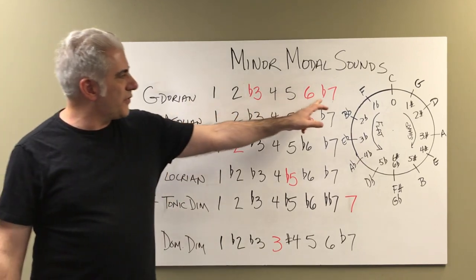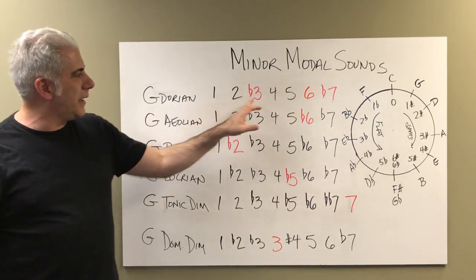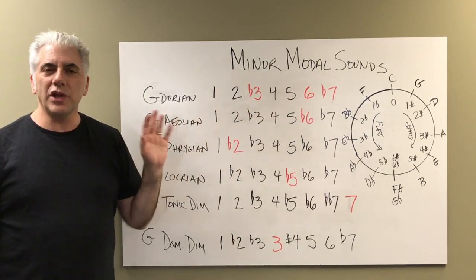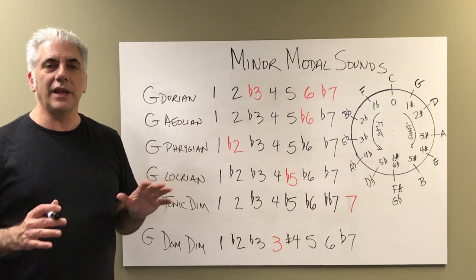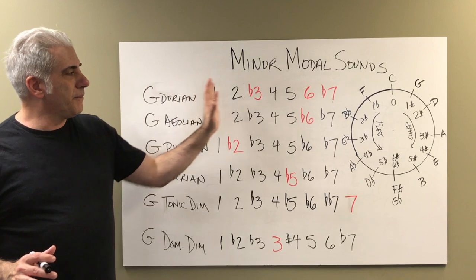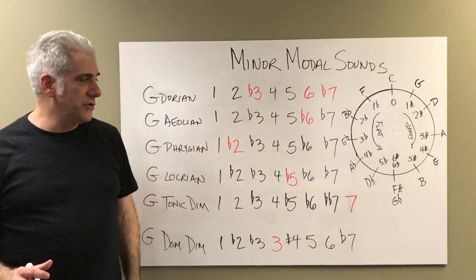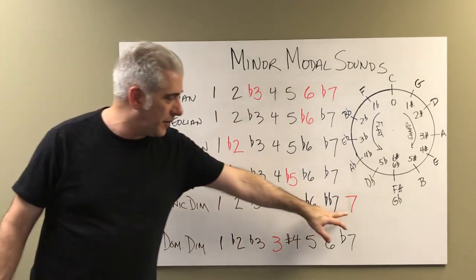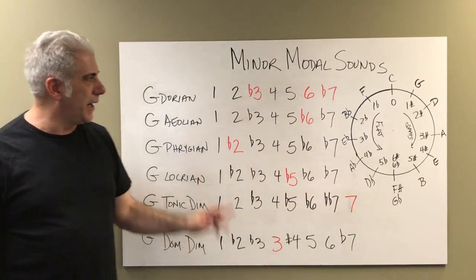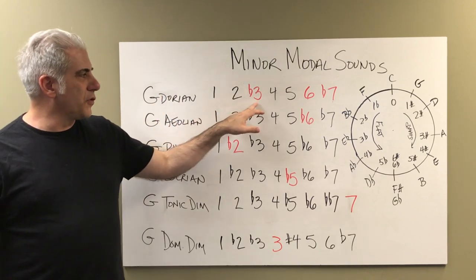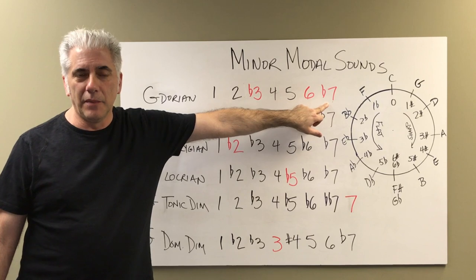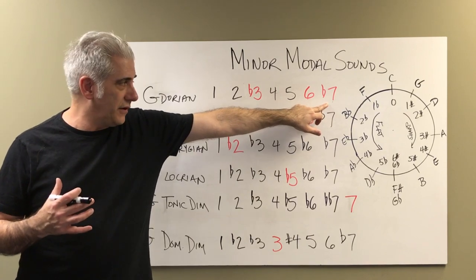Let's talk about Dorian. I have some numbers here in red, and the reason is I'm showing you what changes from scale to scale to give it its particular sound. We're not using the melodic minor scale, which has a major seventh. We do have one scale that does have a major seventh, which is the tonic diminished scale. But the characteristic notes of Dorian — we want to look for these half-step relationships in the mode that will give it its characteristic sound.